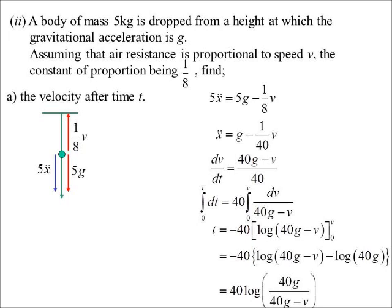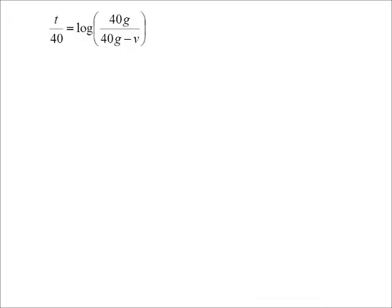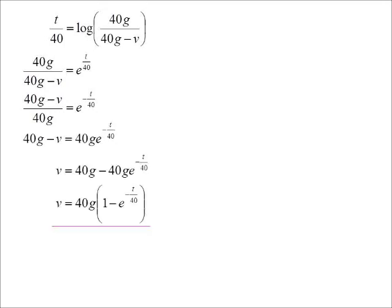So be careful though. So t/40 equals log of 40g over 40g minus v. But that is t in terms of v. They wanted v in terms of t. So now we just have to make v the subject of all this. Okay, to undo the log, exponentialise, if that is such a word. So there's e to the power of t/40. I want to get the v on the top of the fraction so I've turned both sides upside down. That means it's now e to the power of minus t/40. Multiply by the 40g. Isolate the v. I've decided to factorise it and there we go: velocity is 40g times 1 minus e to the power of minus t/40.